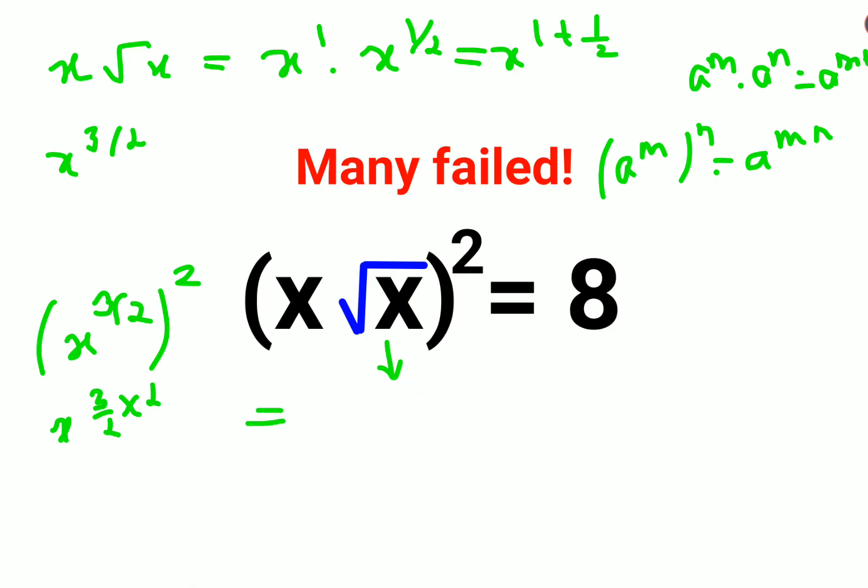So eventually this entire thing comes out to be just x cubed equals 8, which can be written as x cubed equals 2 cubed, right?